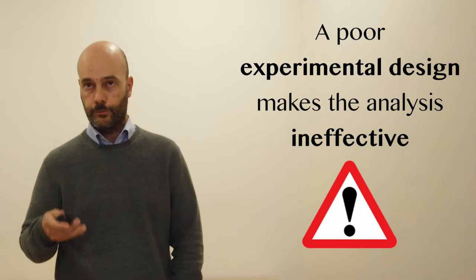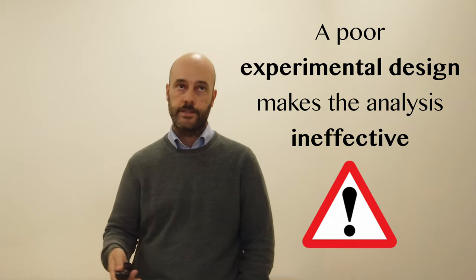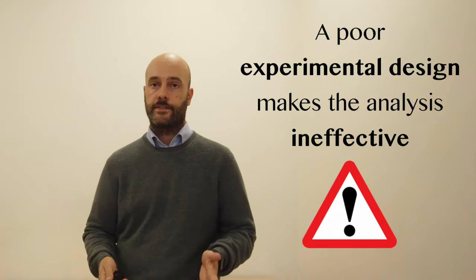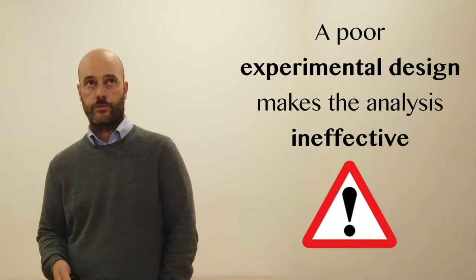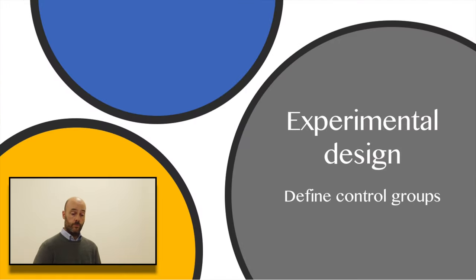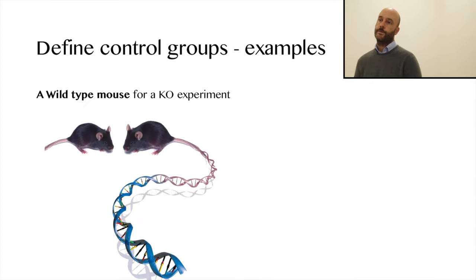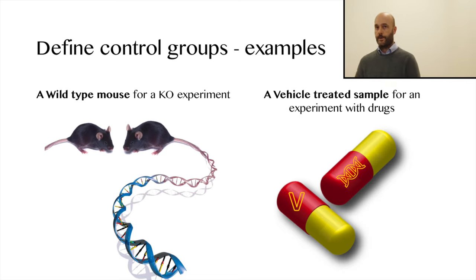The first part of this type of study is experimental design. This is the most important part because if the experimental design is not well designed, our results may not answer our first question. So the first thing we have to do is define control groups, and of course the control groups are the wild-type mice for a knockout experiment, or an untreated sample for experiments with drugs and growth factors.